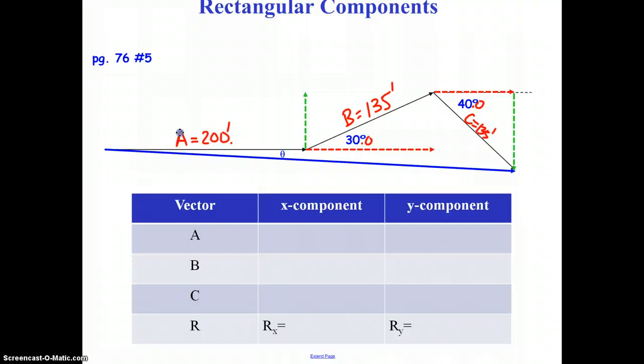Alright, let's get right to it. To calculate these components, we start with A. Ax would be A times the cosine of zero degrees, which would be 200 times cosine of zero degrees, which is 200 feet. The y component of A, Ay, would be A sine theta, which is 200 feet sine of zero degrees, which is of course zero.